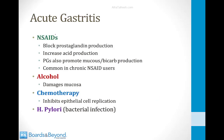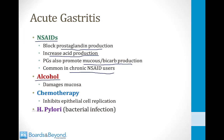Acute gastritis is acute inflammation of the mucosa layer of the stomach, presenting with symptoms of dyspepsia. The first common cause is use of NSAIDs. NSAID drugs inhibit prostaglandin production, which increases acid production from the parietal cells and reduces mucus and bicarb production. NSAID-induced acute gastritis is common among chronic NSAID users, such as people with inflammatory conditions like rheumatoid arthritis or chronic back pain who take NSAIDs every day.